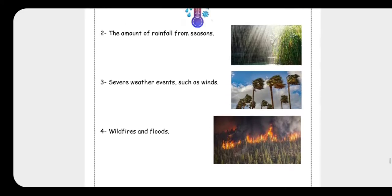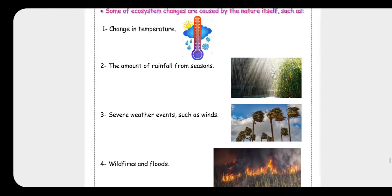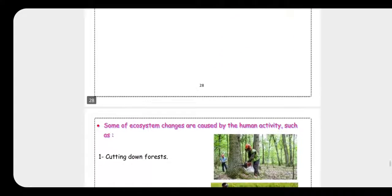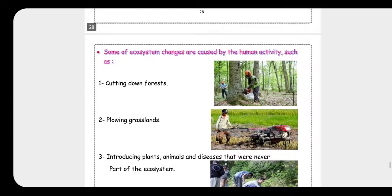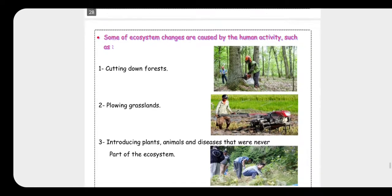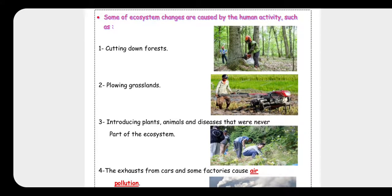All of these are caused by nature. Now we will talk about ecosystem changes caused by human activity. You have to know that these habits are very harmful to the environment. The first one is cutting down the forest, or removing all trees — it is very harmful for the environment.